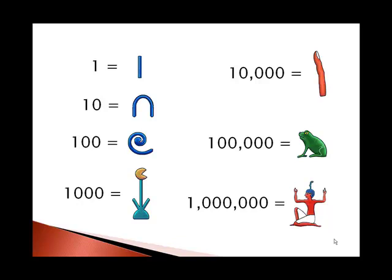1,000 was a lotus flower, sort of looks like Pac-Man. 10,000 was a pointing finger. 100,000 was a frog. I've also seen this as a fish. I usually write a fish for 100,000. And 1,000,000 was either a picture of an astonished man. When I draw this, it usually looks like a stick figure, or it could also be a picture of a certain Egyptian deity.